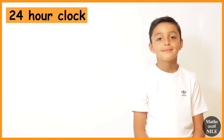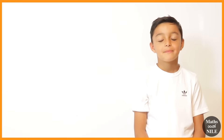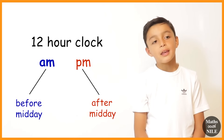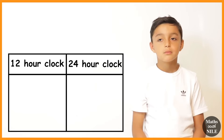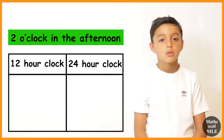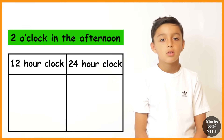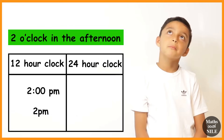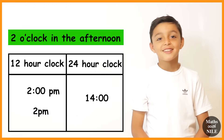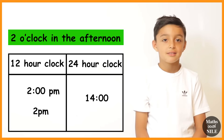Hi Niall. What's the main difference between a 12-hour clock and a 24-hour clock? On a 12-hour clock you would say a.m. and p.m., but on a 24-hour clock you wouldn't. So how would you say 2 o'clock in the afternoon on a 12-hour clock? 2 p.m. Very good. But when it's a 24-hour clock it's a bit different — how would you say 2 o'clock in the afternoon on a 24-hour clock? 1,400 hours. So that sounds quite different to what we're used to.